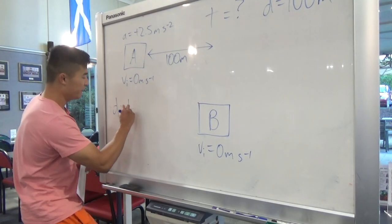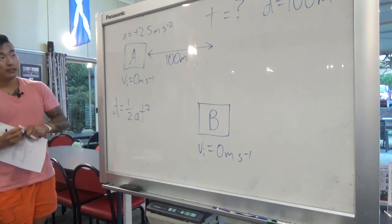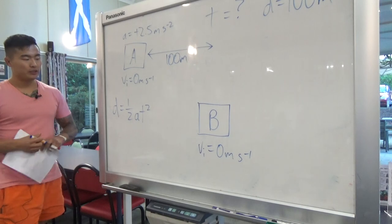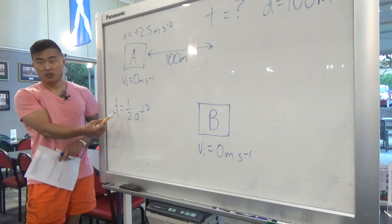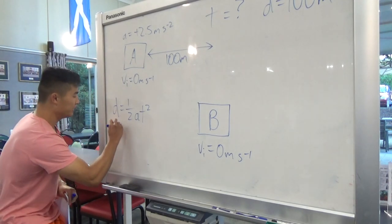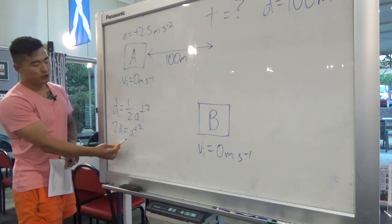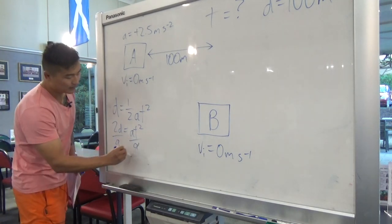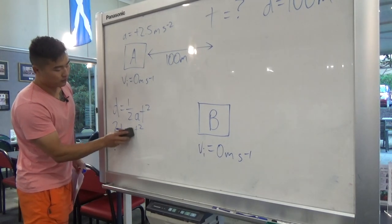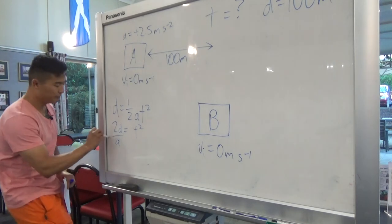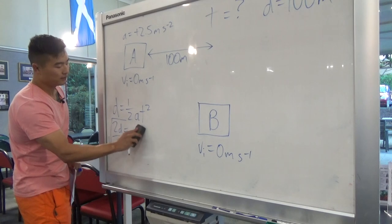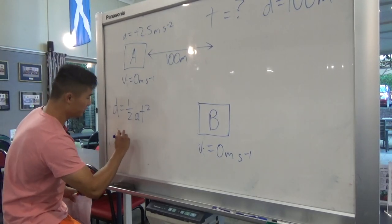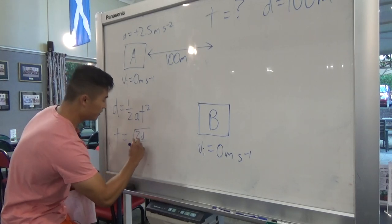We're left with d equals half times a times t squared. We want to find time, so we rearrange: multiply both sides by 2 to get 2d equals at squared, then divide both sides by a to get 2d over a equals t squared, then take the square root of both sides. So t equals the square root of 2d over a.